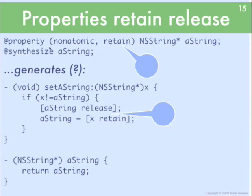So, most object properties are declared like this: at property, and then it's declared to be non-atomic and a retain property, and this is an NSString called AString. We won't talk about non-atomic, but when you say that this property is a retained property, that means that when the property is set, the value being assigned to that property is gonna get retained.